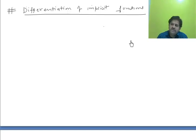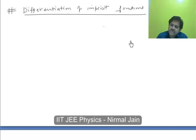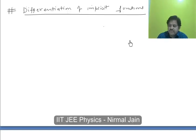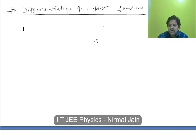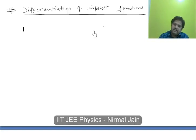In this video lecture, we will deal with differentiation of implicit functions. At first we will have to understand what these implicit functions are. If we try to understand about implicit functions, then we can simply state that in any function where dependent and independent variables cannot be separated on two different sides — that is on the left-hand side as well as the right-hand side — then such functions will be called implicit functions.